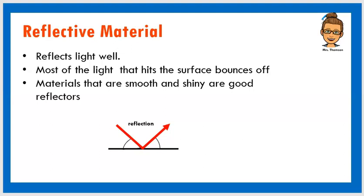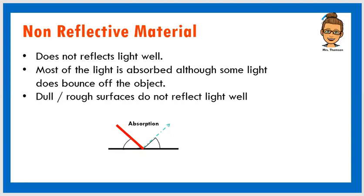But we also have some material that we would say are non-reflective material. And these non-reflective materials, instead of reflecting the light, instead of the light bouncing off, what happens is most of the light is going to be absorbed by the material. So these materials do not reflect light well. Most of the light is absorbed.